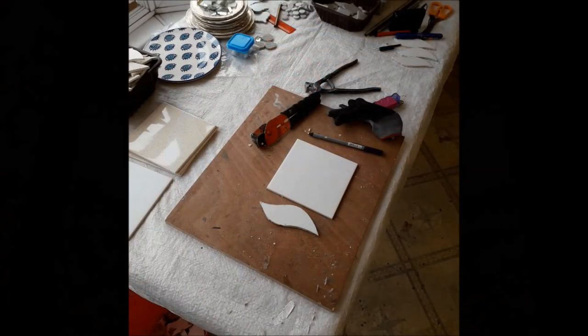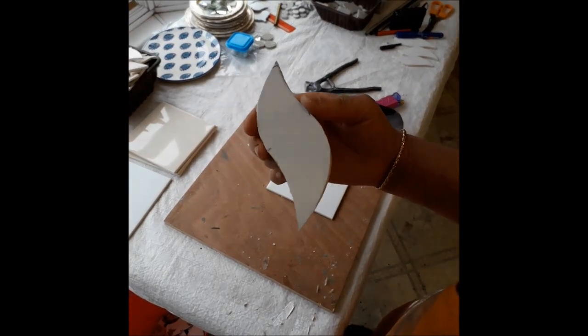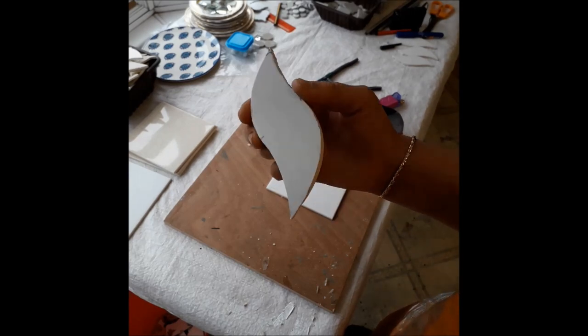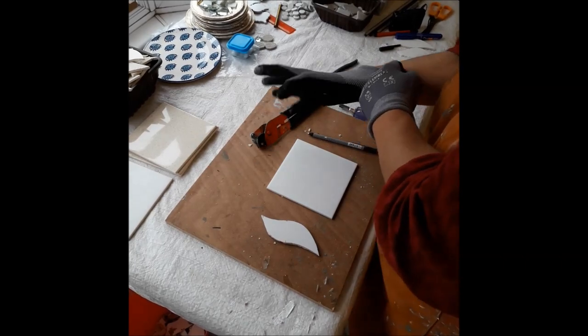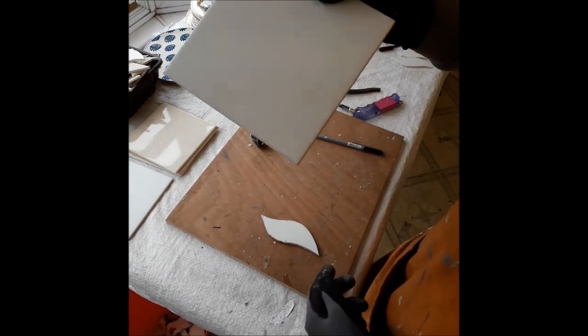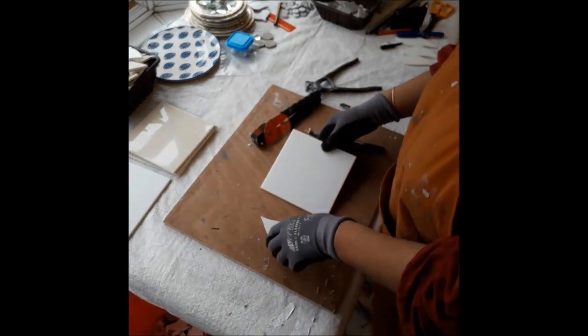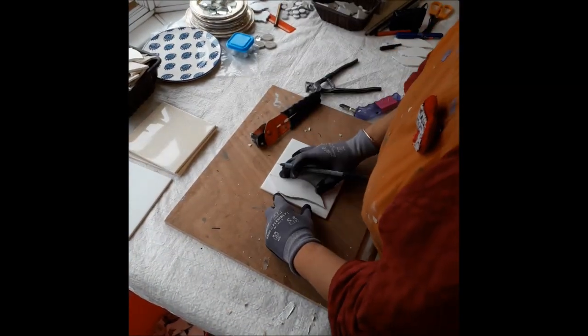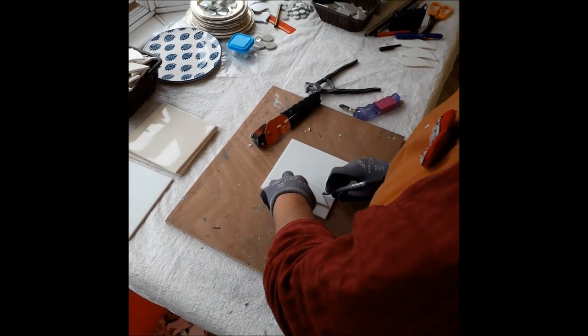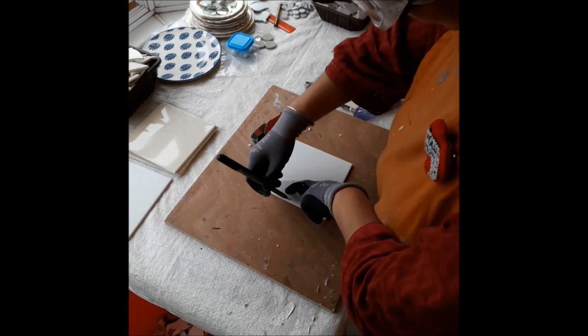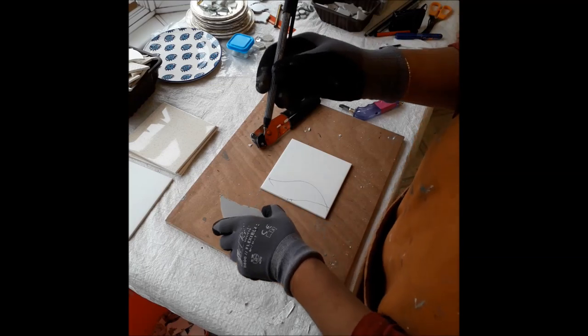I thought I'd show you how I cut my shapes for the peacock feathers. What I do first is use just an ordinary bathroom kitchen tile and I will use the shape as a template. I'd get a nice thin pen, not a permanent pen, something they can rub off.